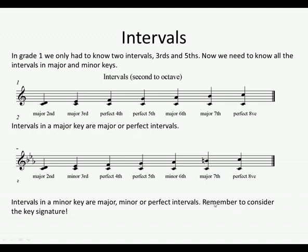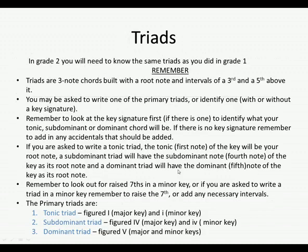You need to remember to consider the key signature, because if you weren't looking at this key signature here, it would look just like the C major scale. But because of this key signature, we have things like the minor third and the minor sixth. So that's really important — remember to look at the key signature. On to triads.